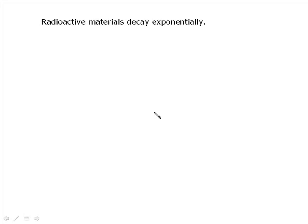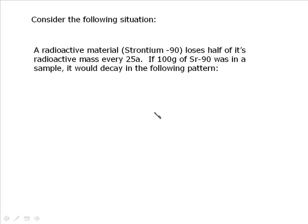This radioactive decay, or exponential decay, is based on the idea that radioactive materials do decay exponentially. If we were to look at a very common type of example, we have a radioactive material, let's say strontium-90, and it loses half of its radioactive mass every 25 years. We start with a sample of 100 grams of strontium-90. The 90 is just the isotope. That's more of a chemistry or physics issue, we don't use it at all in our calculations.